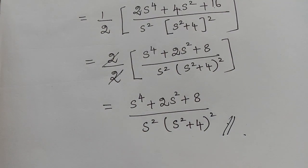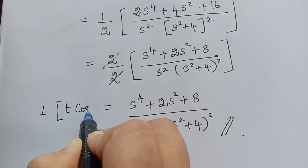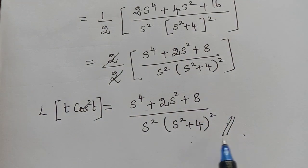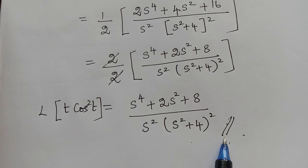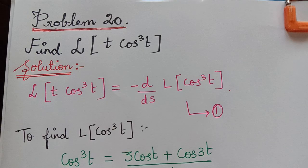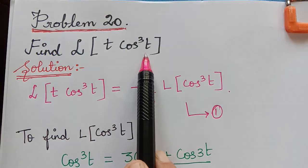Therefore, the Laplace transform of t·cos²t is equal to (s⁴ + 2s² + 8) / [s²·(s² + 4)²]. Hope you have understood this problem. We will now look at one more problem of a similar type: problem number 20, where we have to find the Laplace transform of t·cos³t.